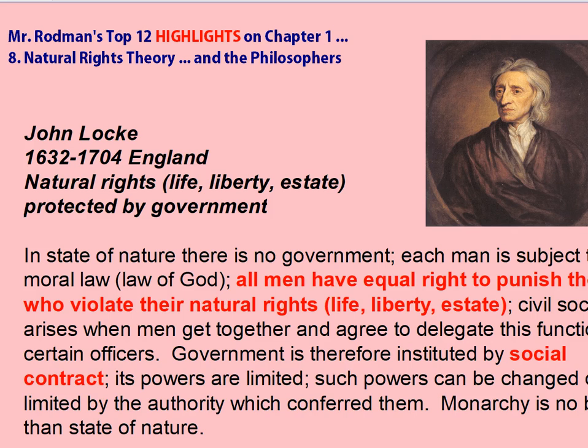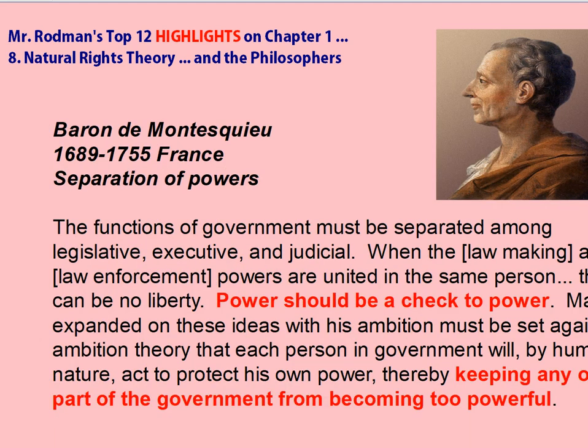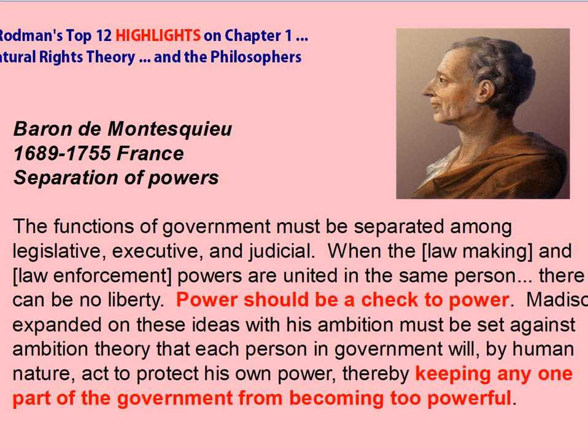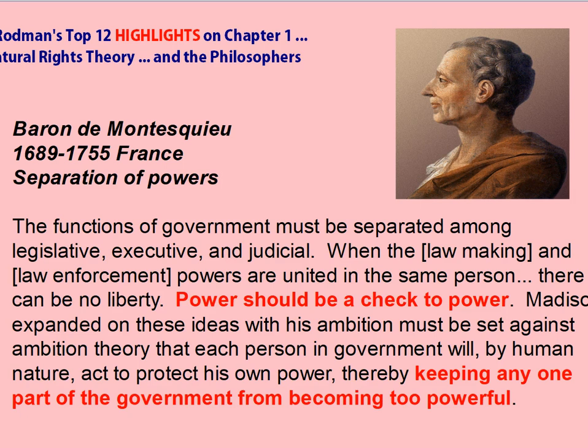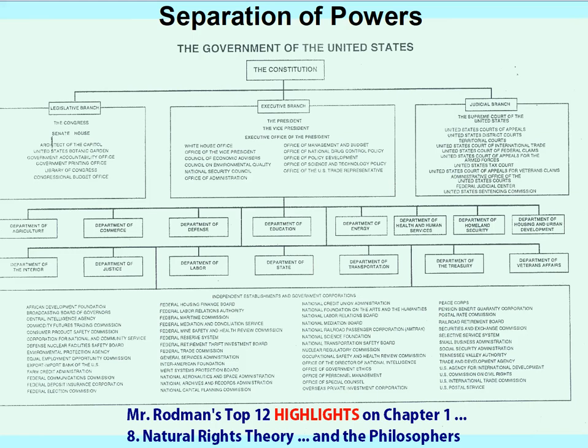The power was in the hands of the people, not government, and that contract could be changed if man felt life, liberty, and estate were threatened. Montesquieu then said we also need to limit the power of government within itself — the checks on power. What we call checks and balances today came from Montesquieu's view that if we have separate legislative, executive, and judicial branches, none should become more powerful than the others, keeping that social contract with the people intact.